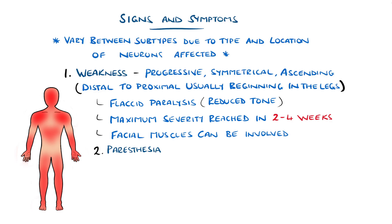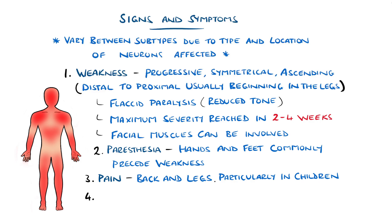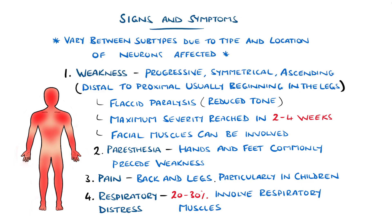Commonly, there is paresthesia affecting the hands and feet alongside the weakness, although usually starting before it. Pain is also a common symptom, mostly in the back and legs and particularly in children. This may also precede the motor weakness. Between 20 and 30% of patients will also develop respiratory distress as a result of involvement of the respiratory muscles, requiring ventilation.